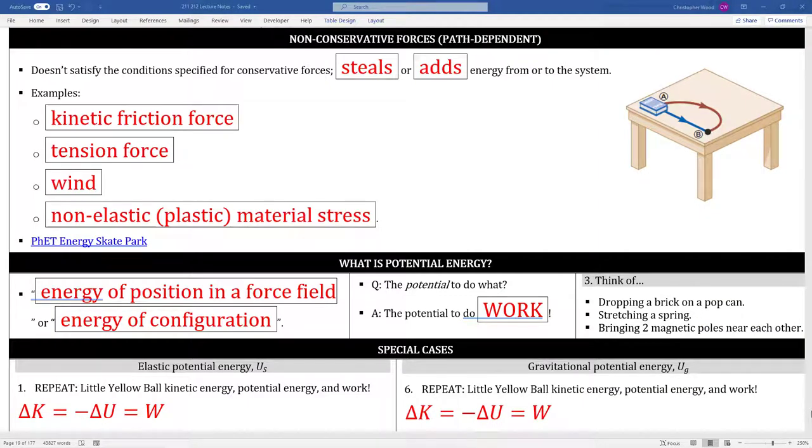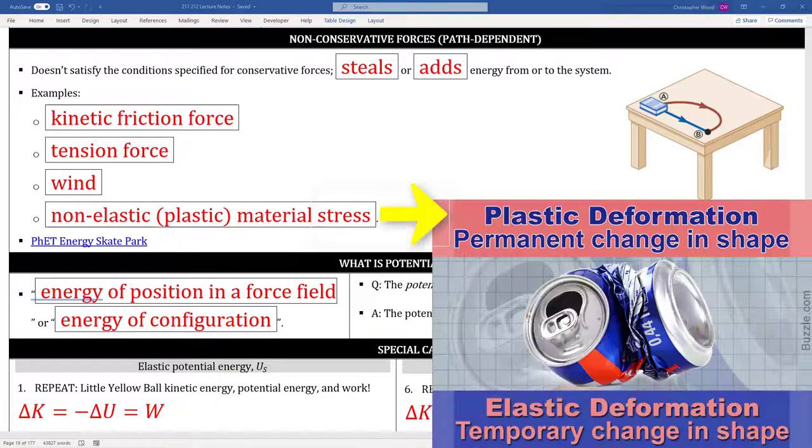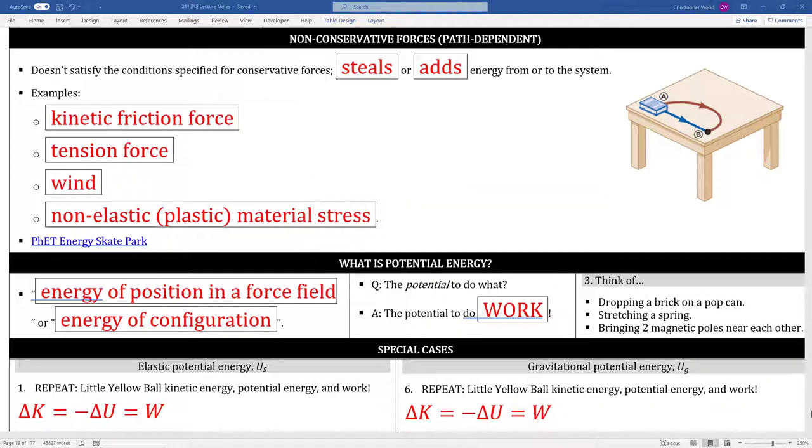A non-conservative force, which is path dependent, doesn't satisfy the conditions specified for conservative forces. A non-conservative force steals or adds energy from or to the system. Here are some examples of non-conservative forces that do non-conservative work. As mentioned, they steal or add energy from or to the system. But it's important to note that the energy that they steal or add might be removed from the system or added to the system, but the total amount of energy in the universe overall is unchanged.